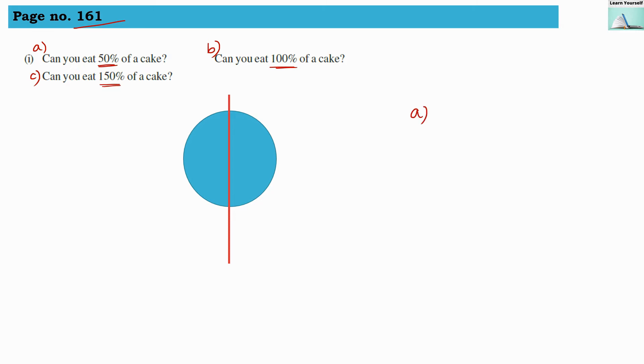So let us first think about A. Can you eat 50% of cake? If this is a full cake, then if we are dividing into half, then we have two halves here. So this is 50% of cake and this is also 50% of cake. When you are eating half a cake, that means you are eating 50% cake. So yes, you can eat 50% of cake.